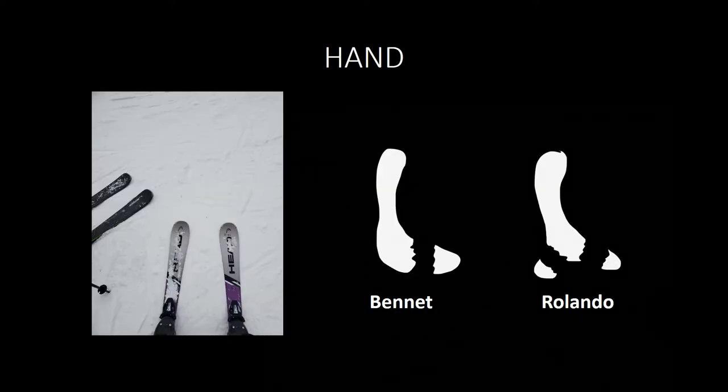Paronychia is an infection of the nail fold, commonly caused by Staph aureus; treatment is drainage and antibiotics. Felon infection is an infection of the distal pulp, also caused by Staph aureus; treatment is drainage and antibiotics. If untreated, it progresses to osteomyelitis or tenosynovitis. Herpetic whitlow is a painful HSV lesion at the fingertip, typically seen in dishwashers or dental hygienists. Treatment is supportive — do not drain it, as that leads to further infection.